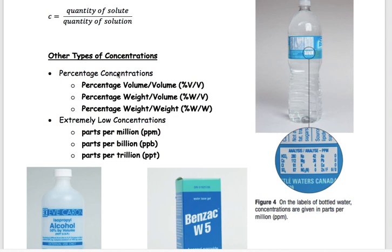There are three types of percentage compositions. The first is volume/volume. The second is weight/volume — I like to think of this as mass/volume, but chemists use the word 'weight.' And then there's mass/mass, or weight/weight. They use the notations W/W and W/V.